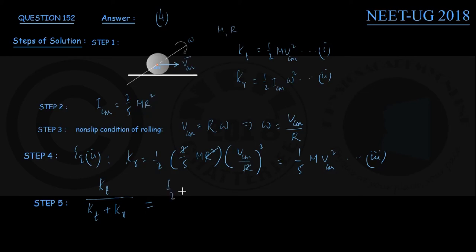So numerator is from equation number 1: half M VCM squared, divided by half M VCM squared plus KR from equation number 3, which is 1/5 M VCM squared. From all the terms, M VCM squared cancels out.